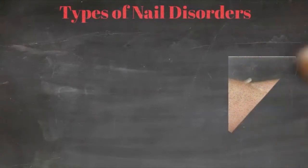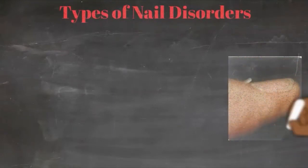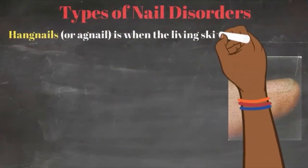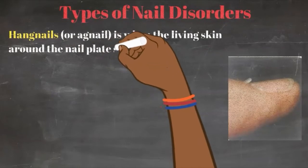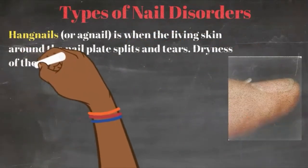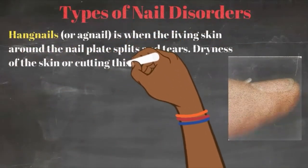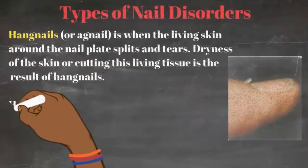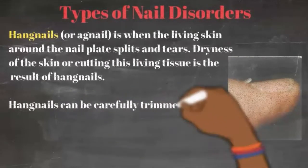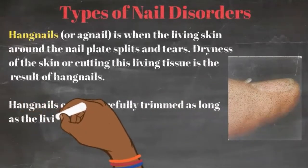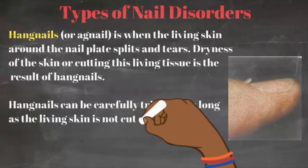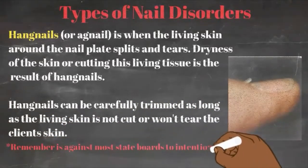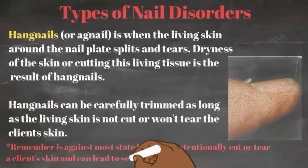Another type of disorder — which you probably wouldn't think is a disorder — is simply a hangnail, or what we call an agnail. This is when the living skin around the nail plate splits and tears. Dryness of the skin or cutting this living tissue results in hangnails. Hangnails can be carefully trimmed as long as the living skin is not cut. Always remember, it is against most state boards to intentionally cut or tear a client's skin, and that can lead to serious infection. This is why it's highly important to know the difference between the cuticle and the eponychium.